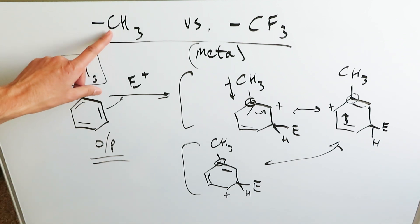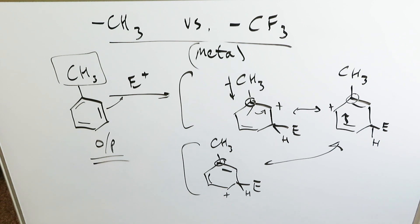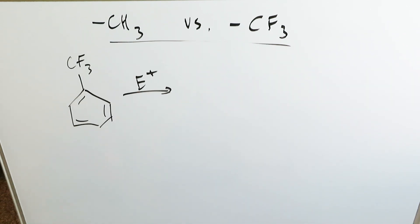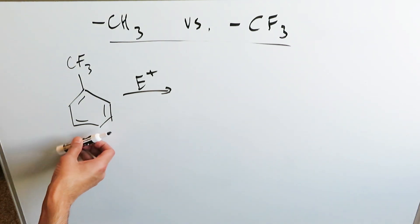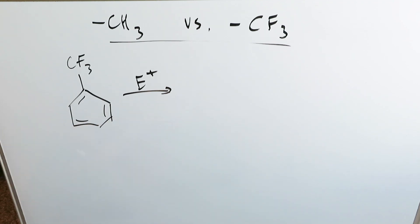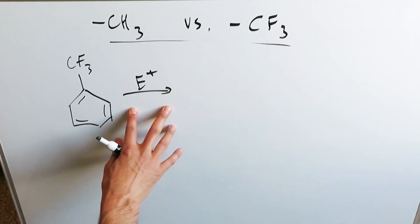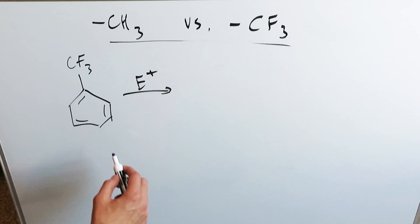That brings us to the end of the discussion with regards to the methyl group. Now let's look at the trifluoromethyl group. We know trifluoromethyl benzene is highly electron withdrawing — electronegative fluorine atoms are present. It's sucking out electron density from the benzene ring, making it less activated towards electrophilic attack. It's a deactivated ring, but we will see it to be a meta director.